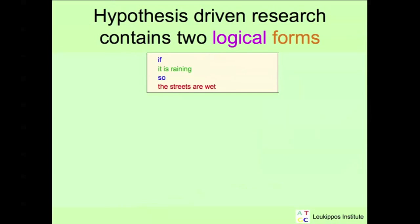Let us have a closer examination of the logical form we found in the hypothesis-driven research. What is a logical form? Let us start with an example sentence. If it is raining, so the streets are wet. If and so are called logical words. These are kept in a logical form. The rest is substituted with symbol signs. So instead of it is raining, we use P. And instead of the streets are wet, we use Q. So we get if P, so Q.